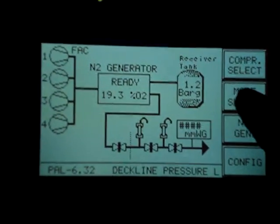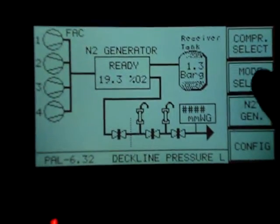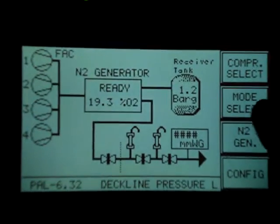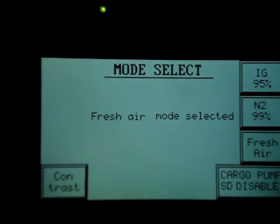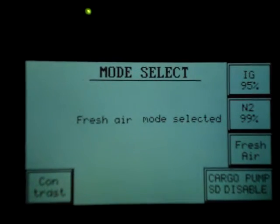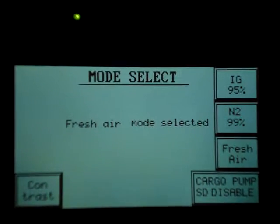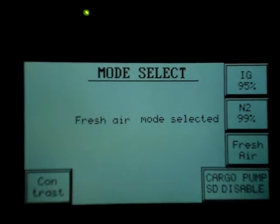This is the mode selection here. Can you see here? Yes, sir. So this mode selection, just you go on, press this mode selection. Once you press the mode selection, you have IG 95% mode, N2 99% mode, fresh air mode.